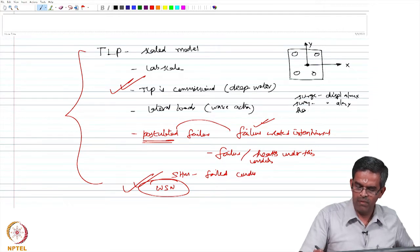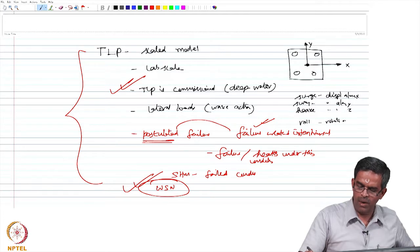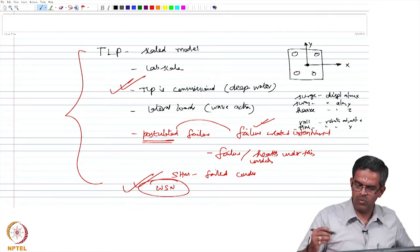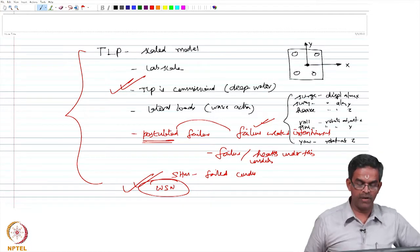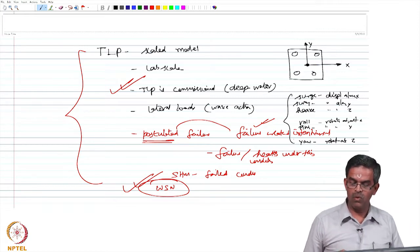Heave is displacement along the z-axis, then roll which is rotation about the x-axis, pitch which is rotation about the y-axis, and yaw which is rotation about the z-axis. It has six degrees of freedom: surge, sway, heave, roll, pitch, and yaw.